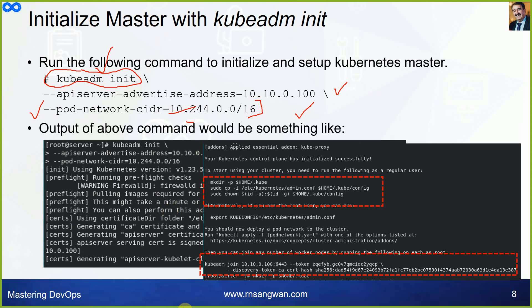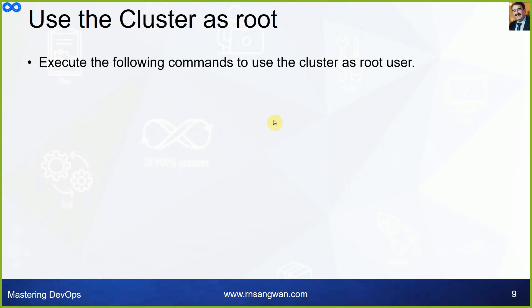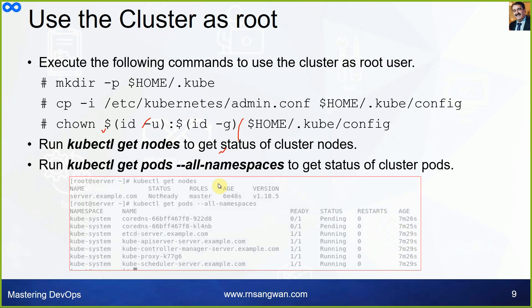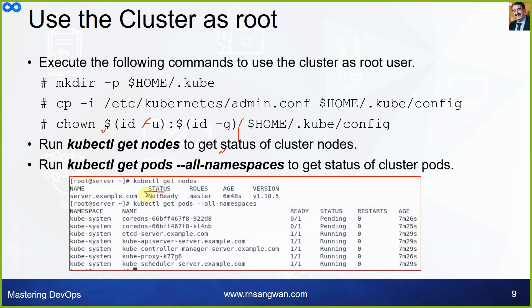The output of 'kubeadm init' includes three commands you must execute, which you have already done, plus a join command to be executed from the worker nodes to make them join the cluster. After executing those three commands, run 'kubectl get nodes' to get the cluster node status — and you will see a 'NotReady' status.